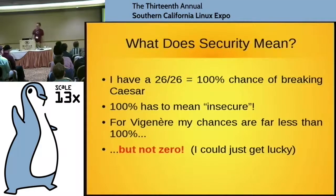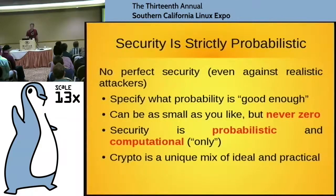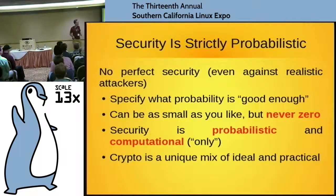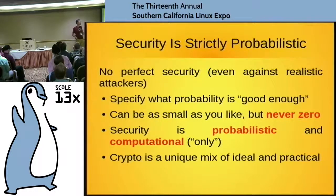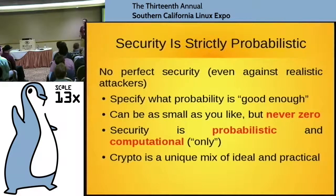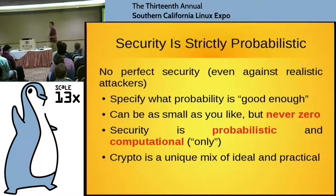What does that mean? We can't ask for security against any attacker you can imagine, and we can't ask for perfect security even against realistic attackers — not with a practical algorithm. We're going to have to say what level of risk is good enough, what probability is acceptable, and then cryptography can say whether we can achieve it. Security for cryptography is not absolute — it's probabilistic. You just decide what you want your odds to be, but you're still gambling. You can stack the deck, but you can't stop gambling.